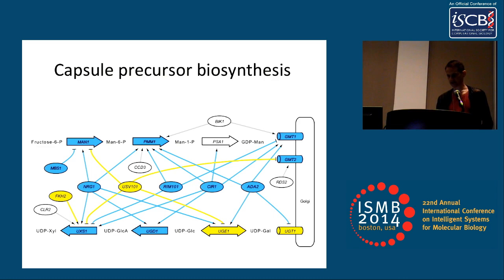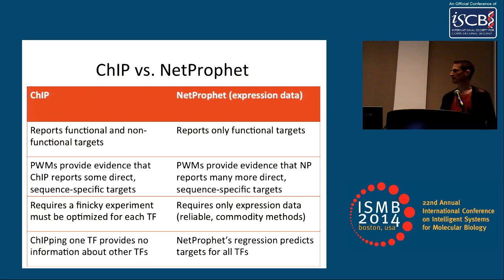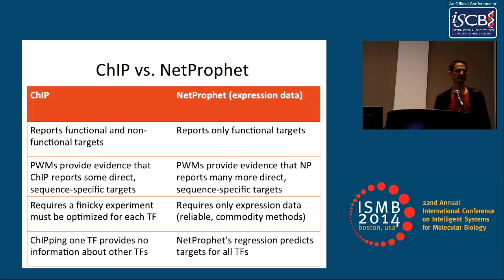To summarize the comparison of CHIP and NETPROFIT: CHIP reports both functional and non-functional targets; NETPROFIT reports only functional targets. PWMs provide evidence that CHIP reports some direct sequence-specific targets. CHIP requires a finicky experiment that must be optimized for each transcription factor; NETPROFIT requires only expression data producible by simple commodity methods. When you CHIP one transcription factor, you get no information about others not yet CHIPped. But when you delete a transcription factor and submit expression profiles to NETPROFIT, the regression component also predicts targets for all other transcription factors — and combined with PhenoProfit, that gives you a way of prioritizing more transcription factors to delete and profile.